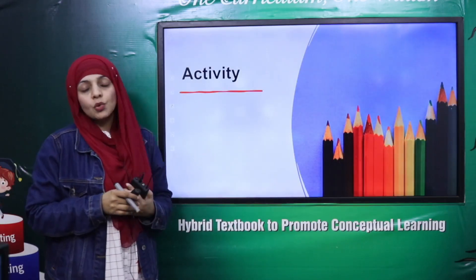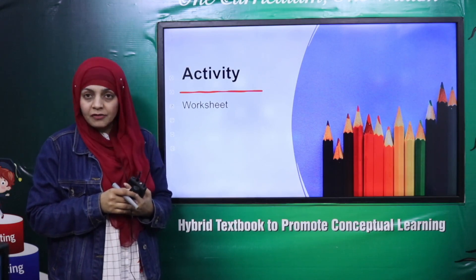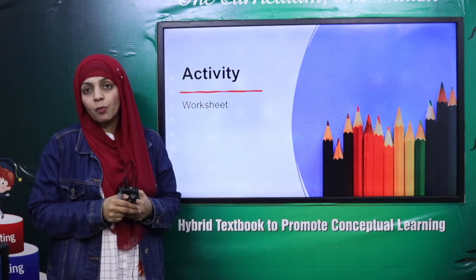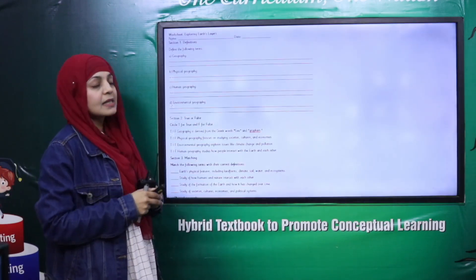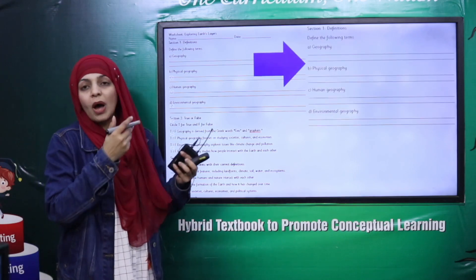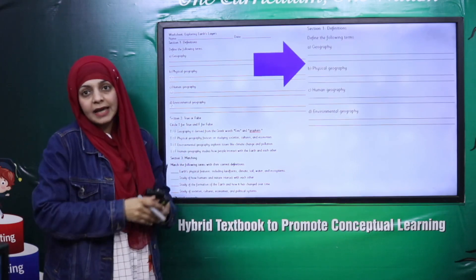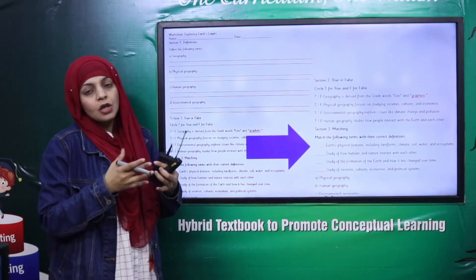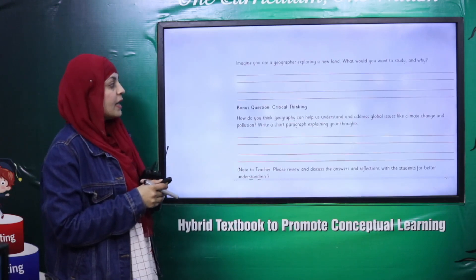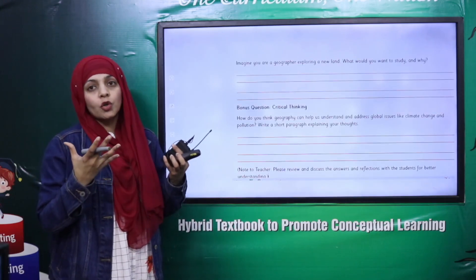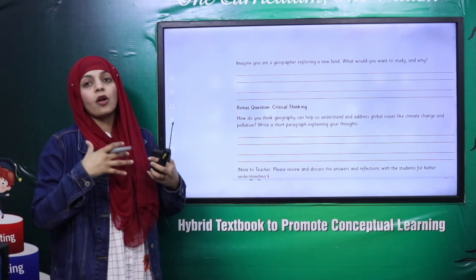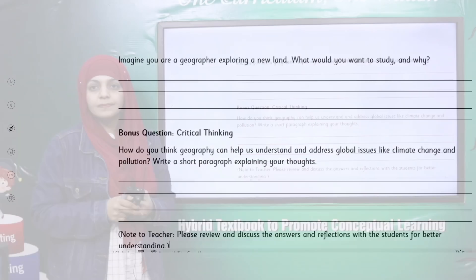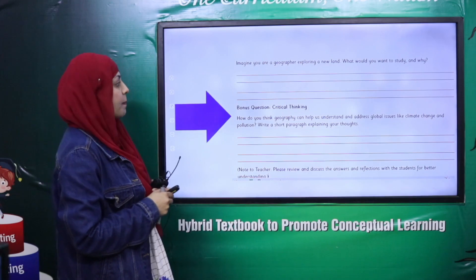Now it is time for an activity. The teacher will divide students into groups and distribute the worksheets, which are given in the description box under this video. The first part asks you to define Geography and its types. The next part has true/false and match-the-columns questions. The last part has critical thinking short questions — read them, discuss among yourselves, and complete the worksheet. Pause the video and quickly complete it, then submit it to your teacher.